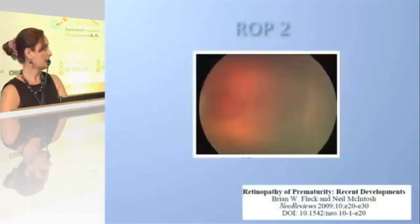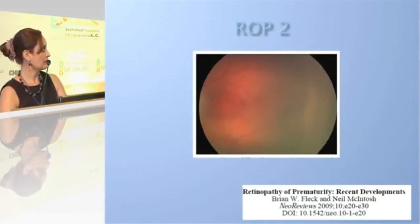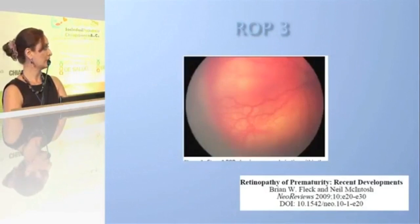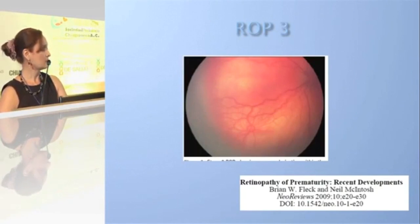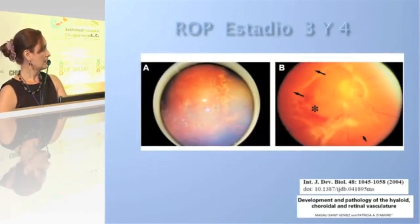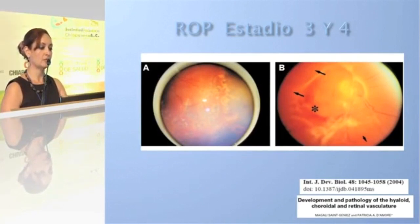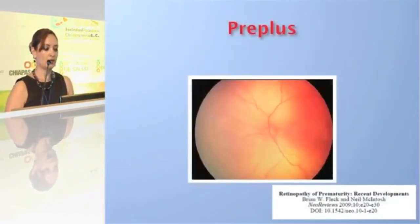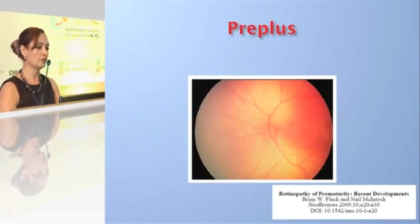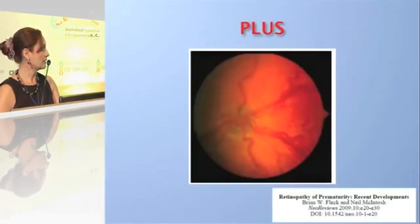Here we have an image of stage 2 retinopathy — we can see how vascularization begins and the ridge that divides the vascular from the avascular zone becomes clearly demarcated. This is stage 3 retinopathy: the vessels are more tortuous and the ridge is more prominent. In stages 3 and 4 there is greater retinal damage with even partial retinal detachment depending on whether the macula is involved, and plus disease shows markedly tortuous and dilated vessels.